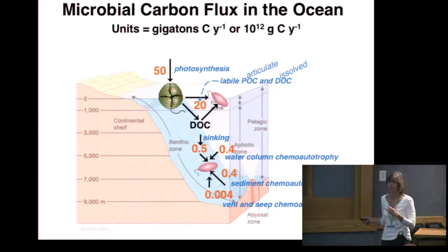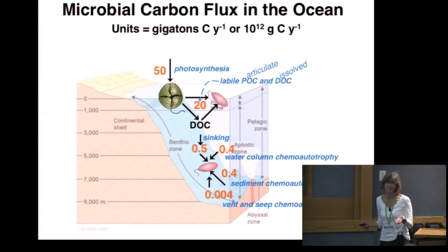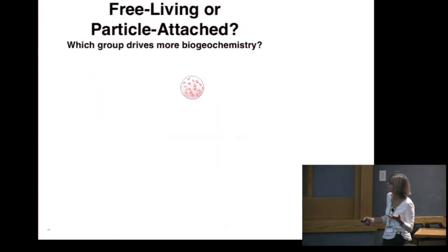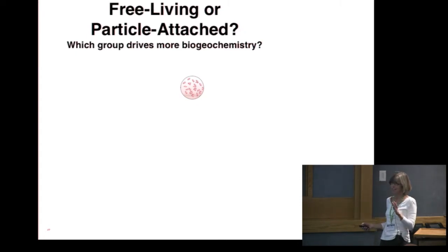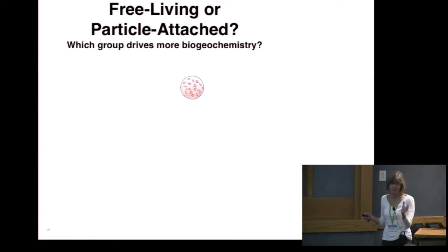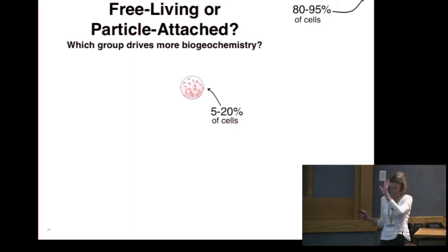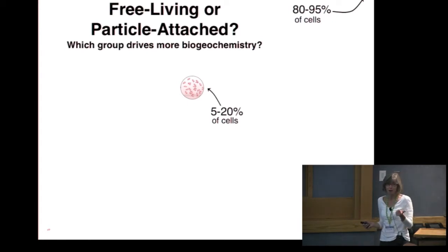Which of these is more important in driving carbon flux in the ocean carbon cycle? One simple way to look at it is to count up all the cells. If we take a liter of water and count all the free-living and all the attached — here's a little free-living bacterium. If they are regularly distributed in our liter of seawater, it's going to be 200 body lengths apart from the next free-living bacteria. They're very different from particles, where there's a concentrated community of cells, but it turns out it's actually the free-living cells that typically win in numbers.